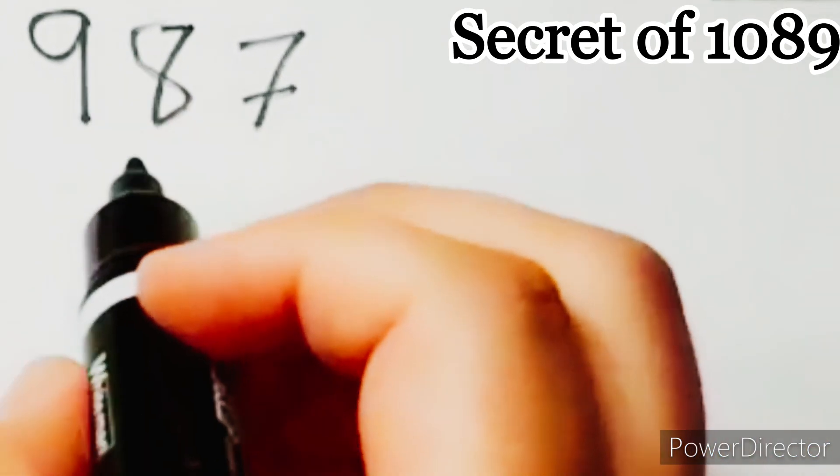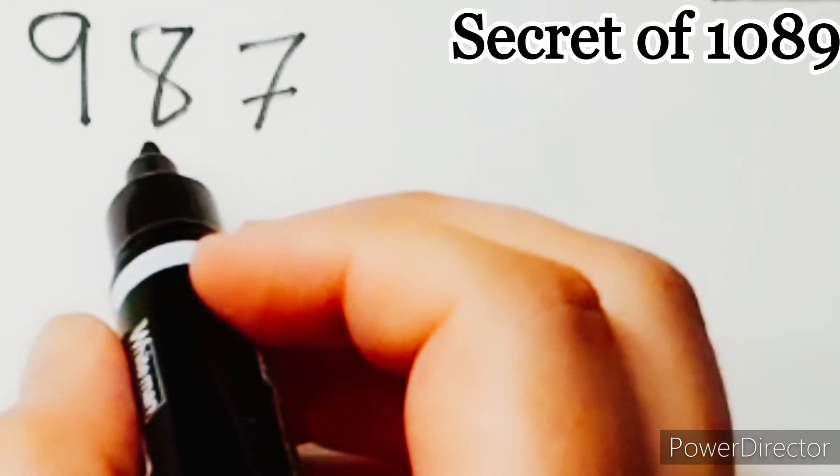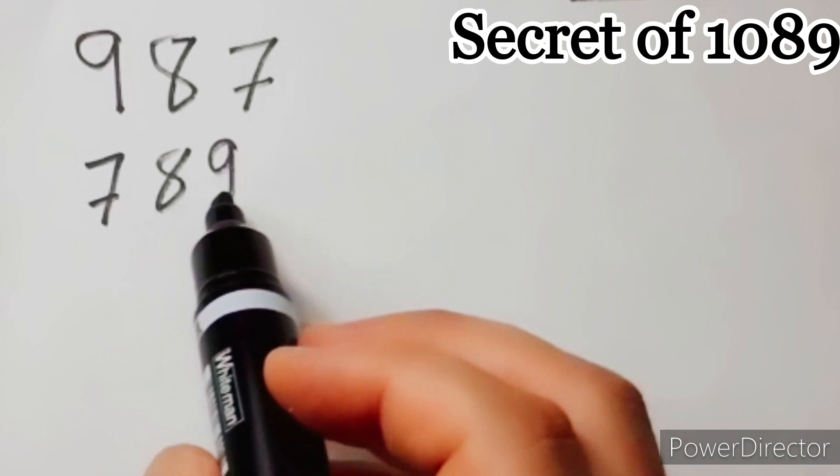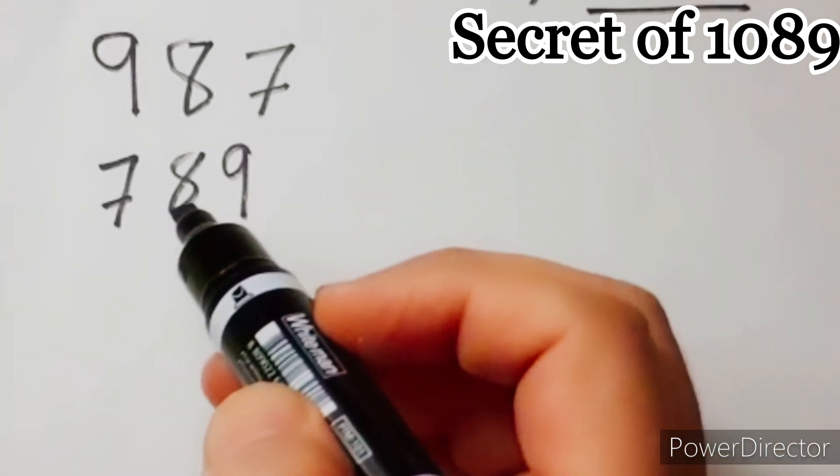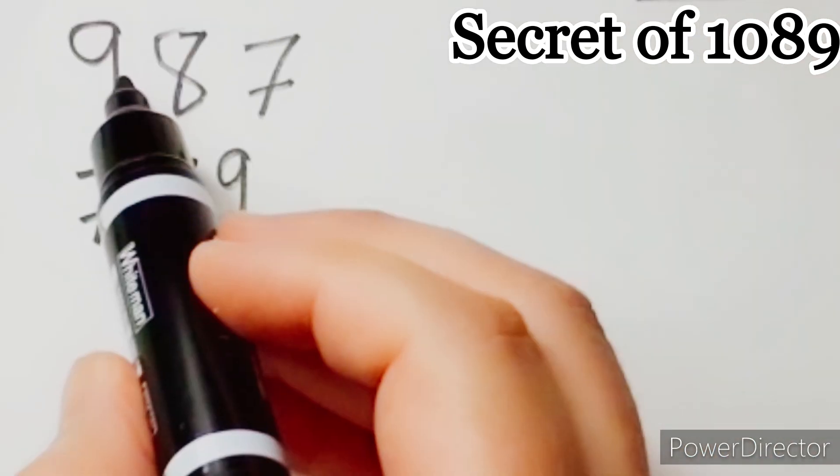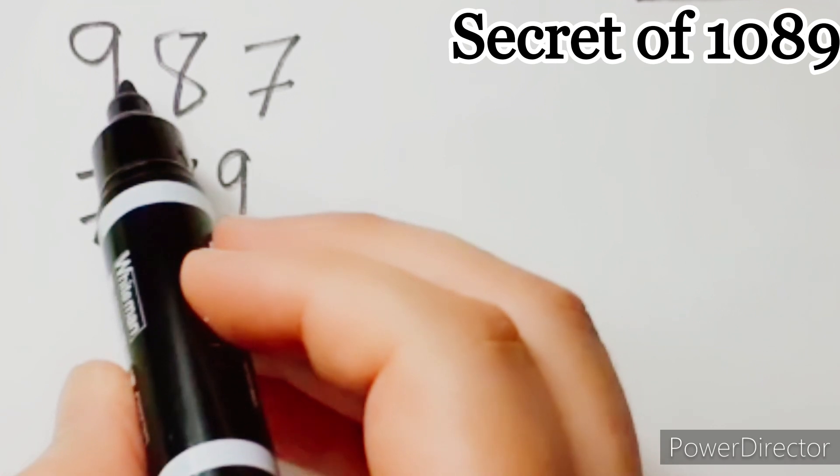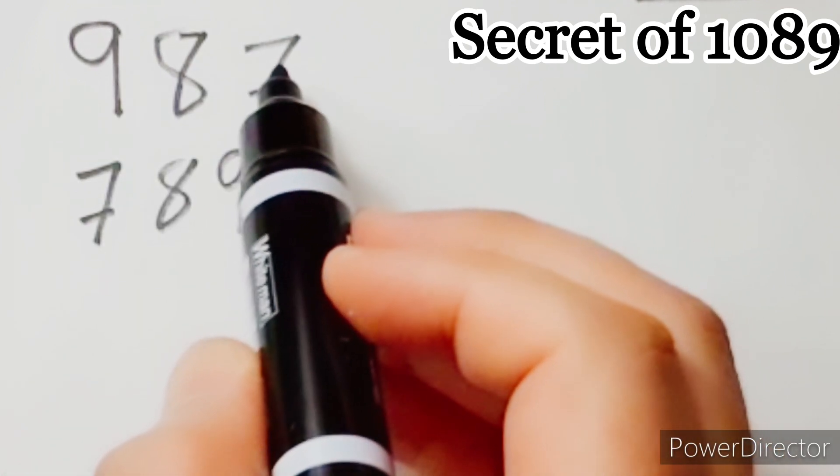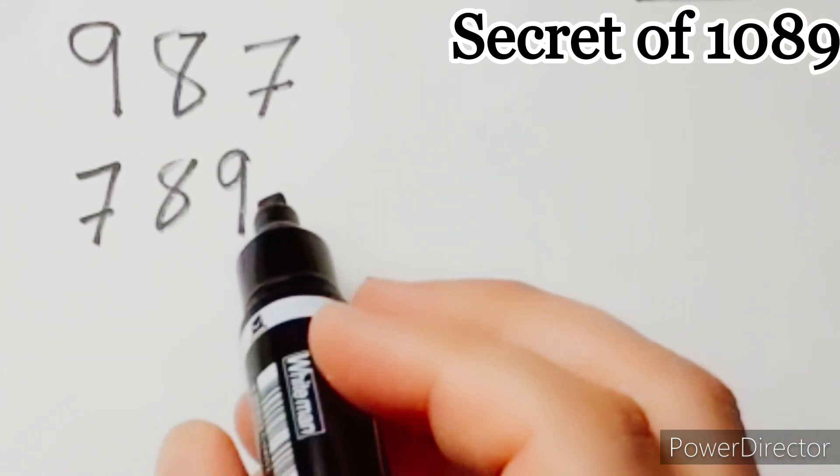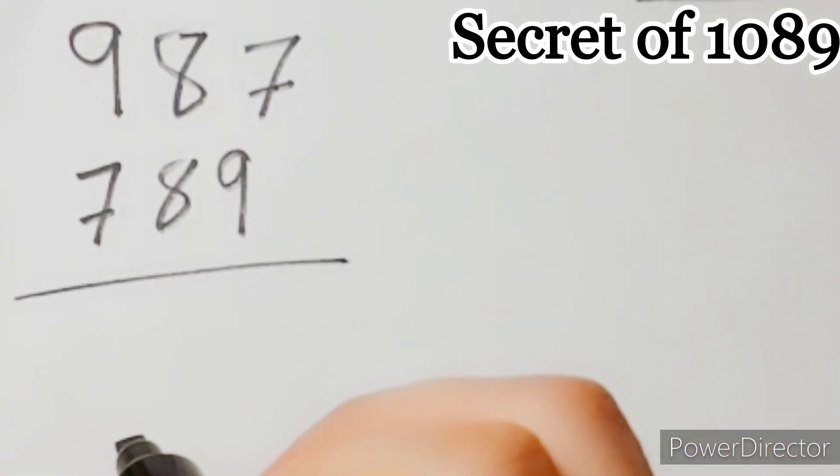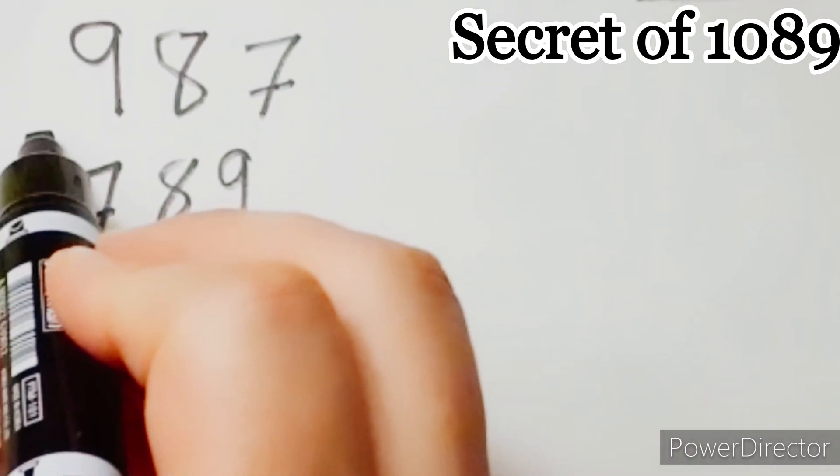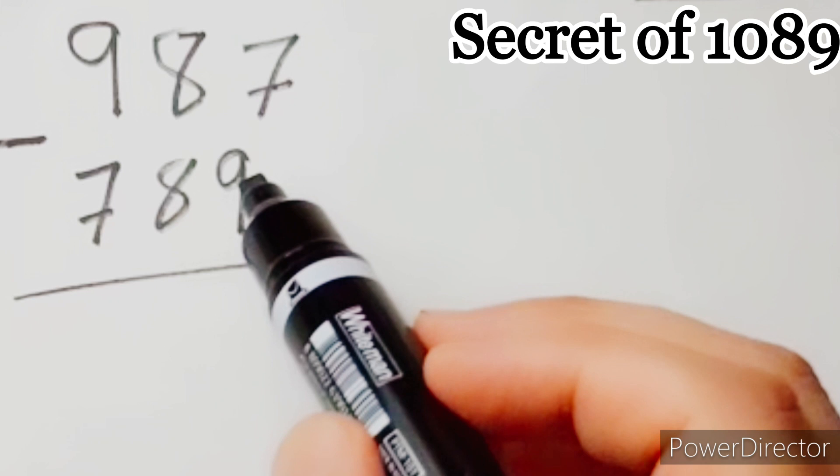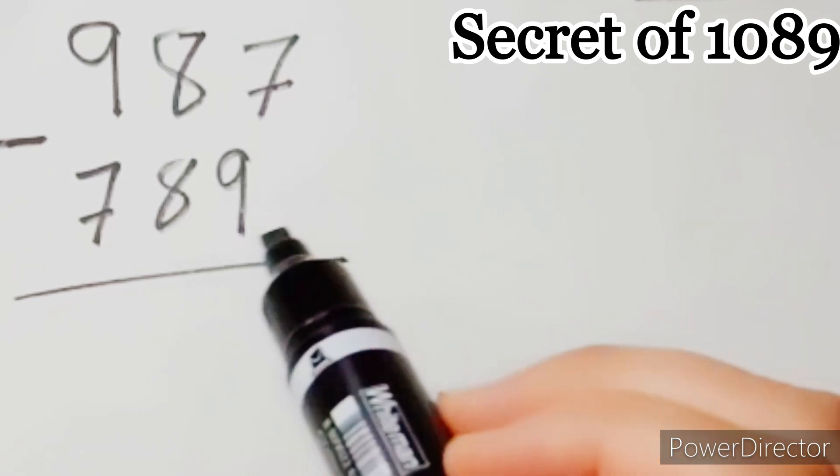And its inverse 789. Pay attention, the hundreds digit must be greater than the units digit to find the difference between them. So, the first step, find the difference between this number and its inverse.